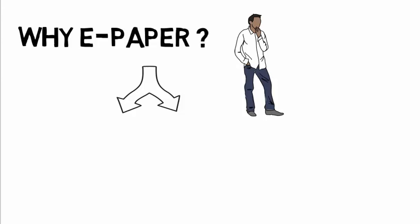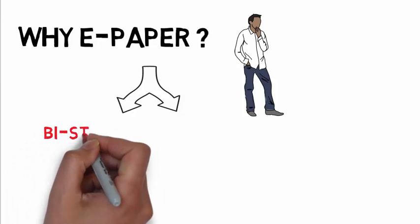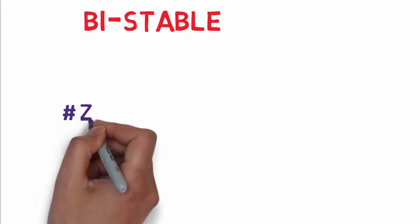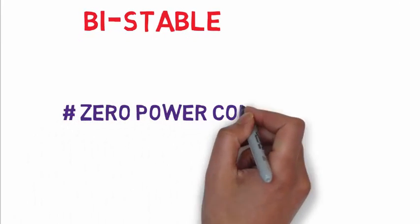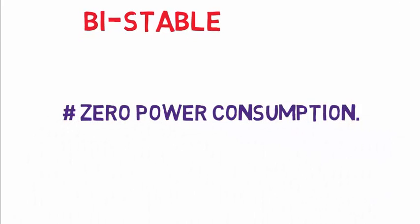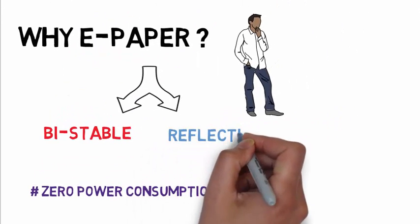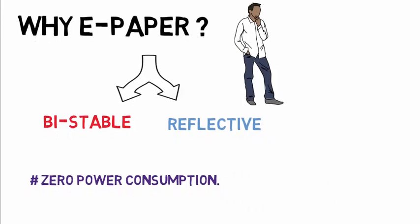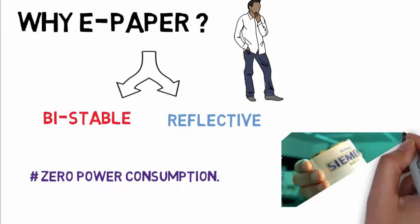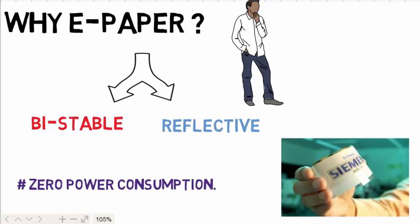So e-paper has two main properties. One of them is bistable, which means that the display uses power only to change the content. Once the image is created, it stays there even when the power is turned off. And the second important property of e-paper is reflective, like real paper. So it can be read in any light. It uses no backlight as LCDs, and does not use any emissive light source as used with CRT monitors.